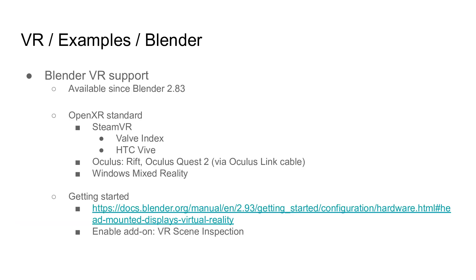Let's look at some examples of how you can use SMPL in VR. We'll start with Blender, since this is one of the easiest ways to see the SMPL model in VR. Since Blender 2.83, the OpenXR standard is officially supported. This lets you use a wide range of VR hardware in Blender, including SteamVR devices like the Valve Index and HTC Vive, Oculus devices like Oculus Quest 2 and Oculus Link cable, and the Windows Mixed Reality family of devices. The VR functionality can be activated by enabling the VR Scene Inspector add-on, which comes bundled by default in Blender.